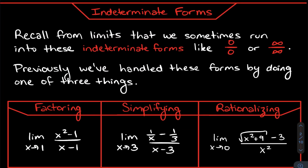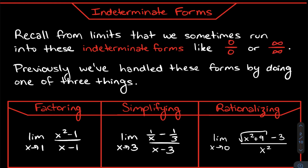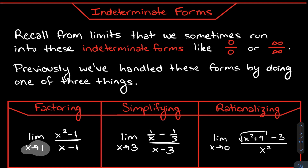We're going to start off talking about indeterminate forms. We've dealt with limits before, and those indeterminate forms — the ones we had to struggle with — were the zero over zero or infinity over infinity forms. Previously, we've handled these in three different ways. The first is factoring: for example, the limit as x approaches 1 of (x² − 1)/(x − 1). Plugging in 1 gives zero over zero, but factoring using difference of perfect squares gives (x − 1)(x + 1), the (x − 1) cancels, and you're left with (x + 1).